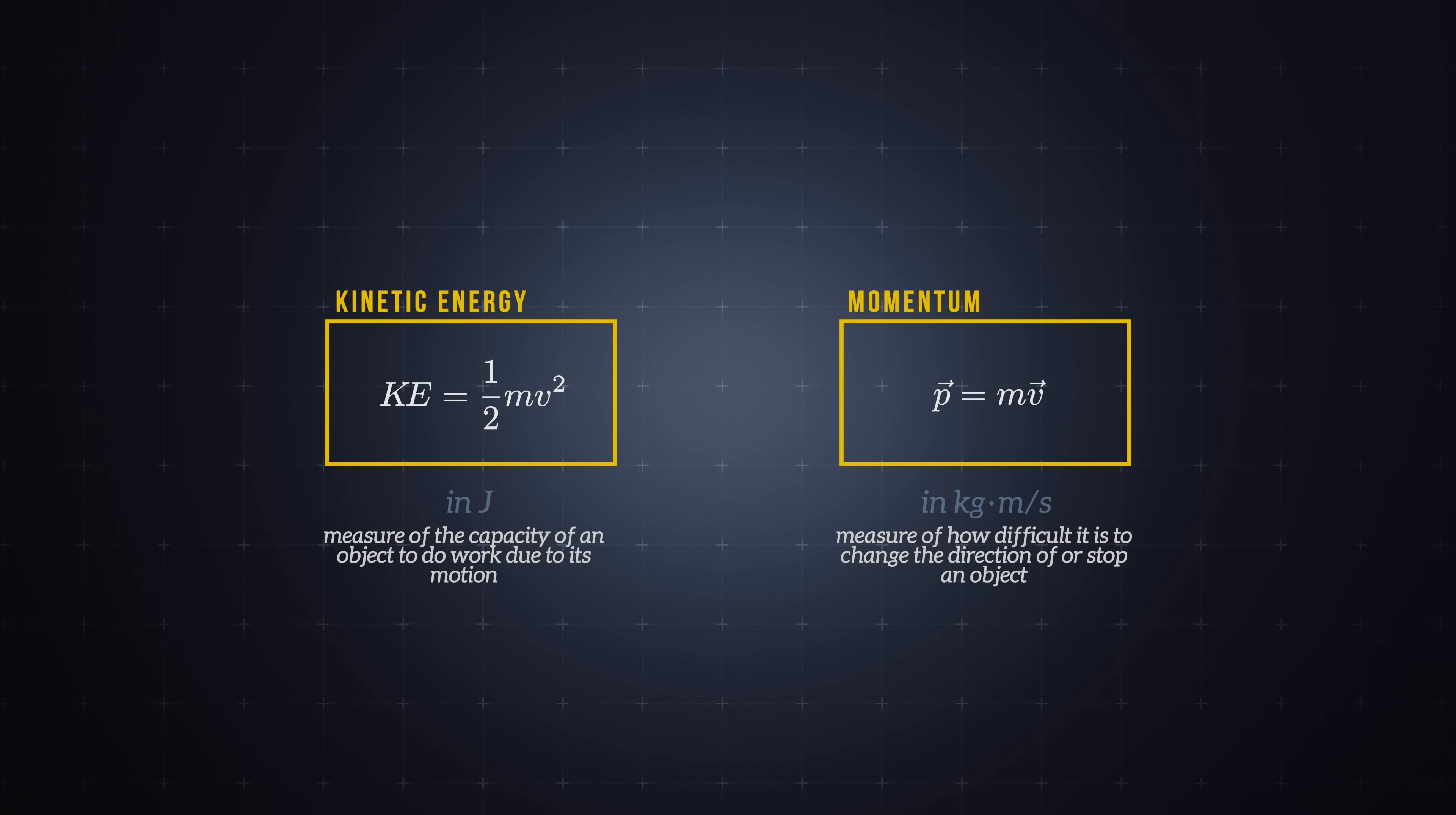We've seen that momentum is always conserved in the absence of net external forces, but this isn't true for kinetic energy. During a collision, some kinetic energy is converted into other forms of energy, like heat, sound, or the energy required to permanently deform the colliding objects.